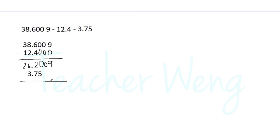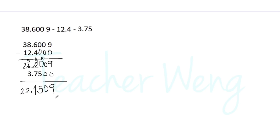The next thing to do is to subtract three and seventy-five hundredths from this result. Let us add a zero to avoid confusion. Nine minus zero is nine, zero minus zero is zero. Zero minus five — borrow one from two, so we have ten minus five, which is five. One minus seven — borrow one from six, so eleven minus seven is four. Copy the decimal point. Five minus three is two, and bring down two. So the answer is twenty-two and four thousand five hundred nine ten-thousandths.